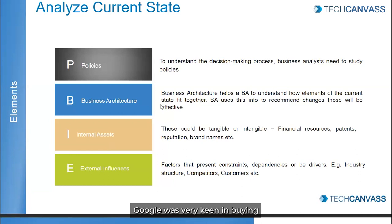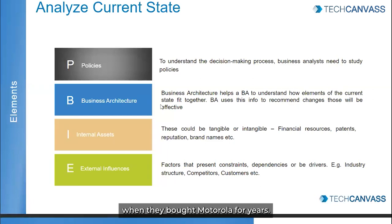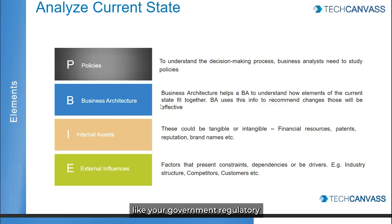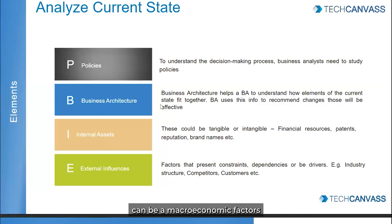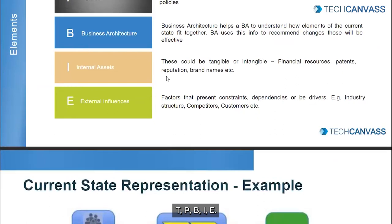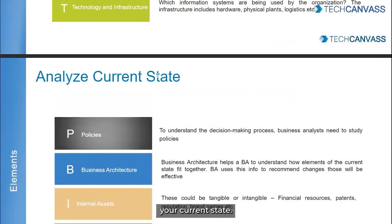How do these connect with each other — what is your business architecture like? That's what you need to look at. Next is internal assets — anything that is a financial resource. An important thing here is patents. For example, Google was very keen on buying a lot of patents from Motorola, and they did when they bought Motorola, and then later Lenovo acquired Motorola. That's your internal asset — anything you have as an asset. External influences are things like government regulatory bodies, industry structure, competitors, macroeconomic factors like labor unions. Look at all of this — BOCTPBIE — when you have to analyze your current state.